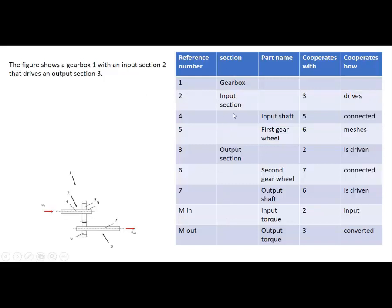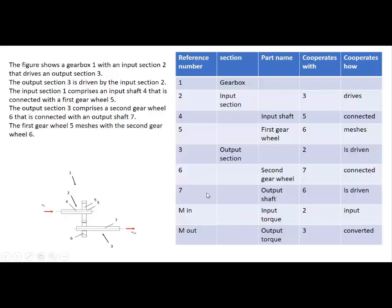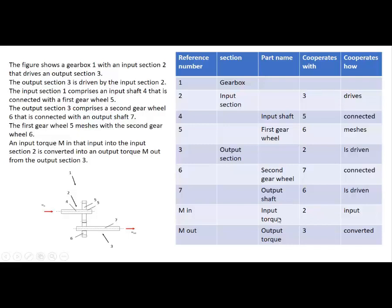The figure shows a gearbox 1 with an input section 2 that drives the output section 3. We remain on the upper level first, describing the figure at the section level. In the next sentence: the output section 3 is driven by the input section 2. Now one level deeper: the input section comprises an input shaft 4 that is connected with a first gear wheel 5. The output section 3 comprises a second gear wheel 6 that is connected with an output shaft 7. The first gear wheel 5 meshes with the second gear wheel 6. An input torque M in that is input into the input section 2 is converted into an output torque M out from the output section 3. This is our figure description.